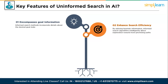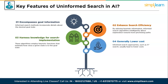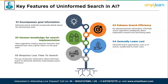The third feature is: harnesses knowledge for search implementation. These algorithms employ heuristic functions that estimate how close a given state is to the goal state, helping prioritize states that are likely to lead to a solution. The fourth is: generally lower cost. Informed search approaches such as A* search usually lead to lower cost in terms of both time and resources by focusing on paths more likely to lead to an optimal solution. The fifth is: requires less time for search. The use of heuristic information allows informed search to efficiently eliminate unpromising search directions, leading to faster identification of solutions, especially in complex problem spaces.